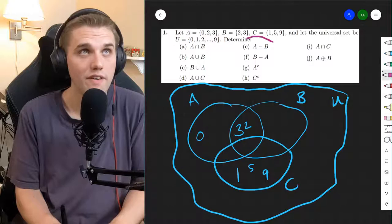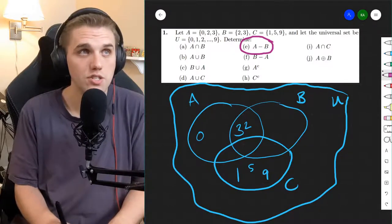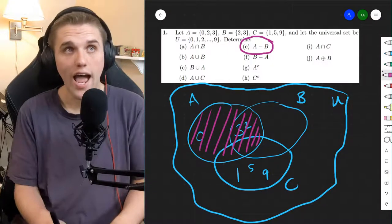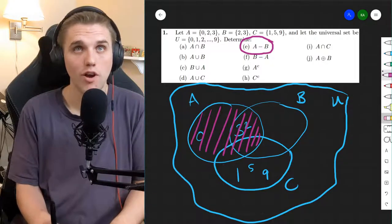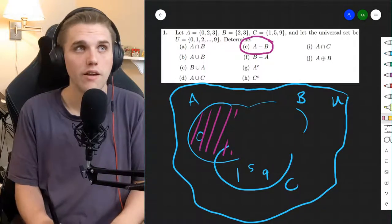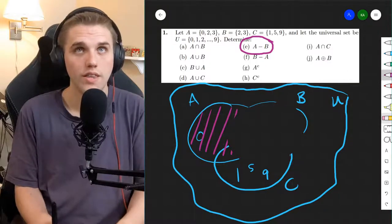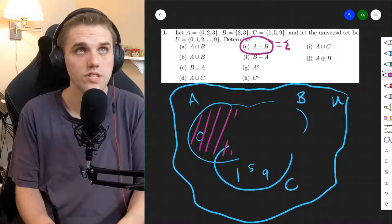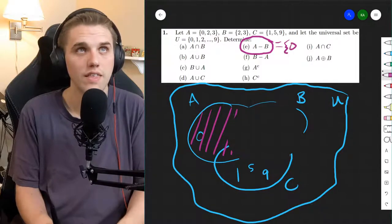All right, up next we have A minus B. So this means start with A and subtract B. So I'm going to grab my eraser and I'm going to subtract B here. And what have I selected? Well, in this case, I selected 0 and that's it. And so this is the set containing the element 0.